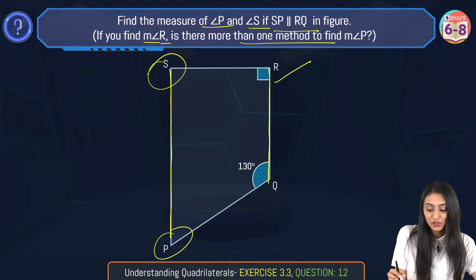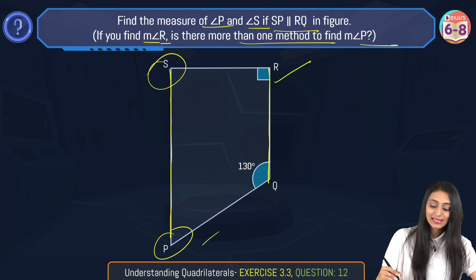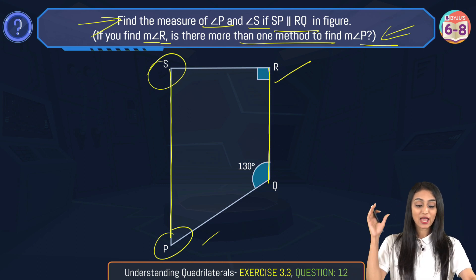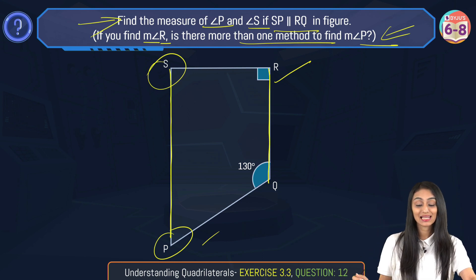This is the second part of the question. Let's first find out, let's start with the first part of the question, which is to find out the measure of angle P and angle S if SP and RQ are parallel.